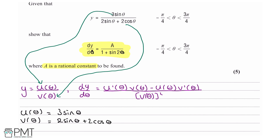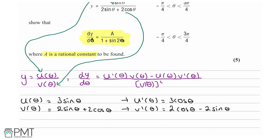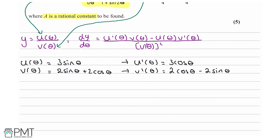This implies that the derivative of u(θ) equals 3 cosine theta. The derivative of v(θ): differentiating each term separately, 2 sine theta differentiates to 2 cosine theta, and 2 cosine theta differentiates to minus 2 sine theta.